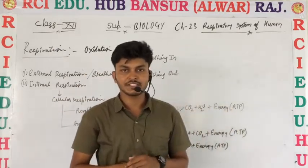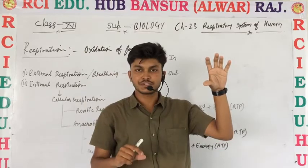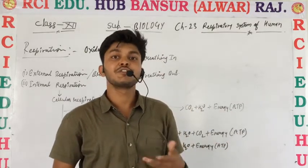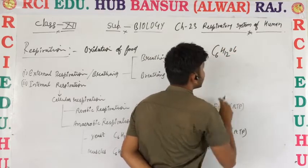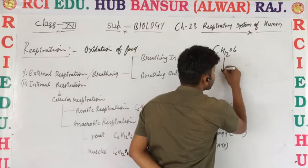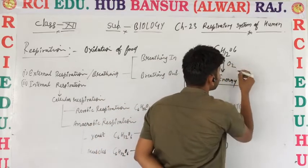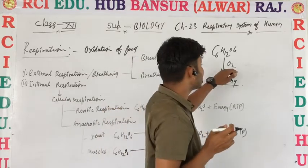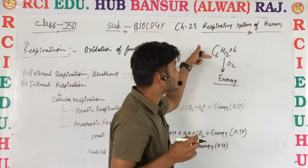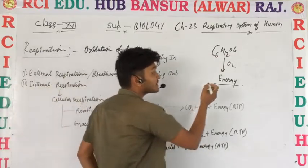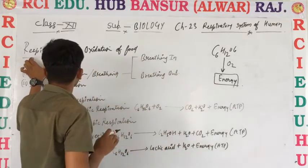We eat everything — chapati, vegetables, and so on. As we studied in the digestive system, large or complex substances are converted into simple substances, known as glucose. This glucose is then converted into energy, and this process takes place in the presence of oxygen. So oxidation of food, where energy is released, is called respiration.